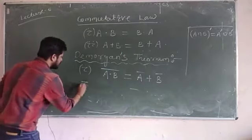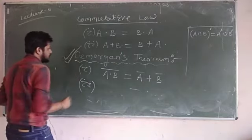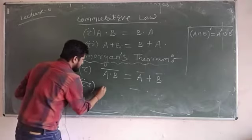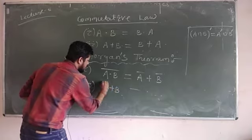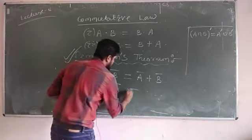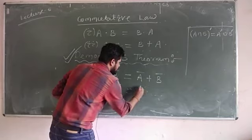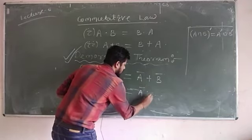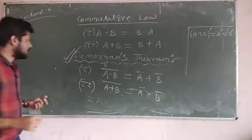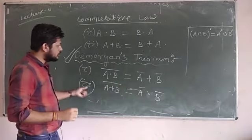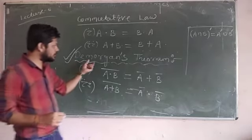The second De Morgan theorem is: (A OR B) complement is always equal to A complement AND B complement. These are the two theorems proposed by De Morgan, and hence this is known as De Morgan's theorem.